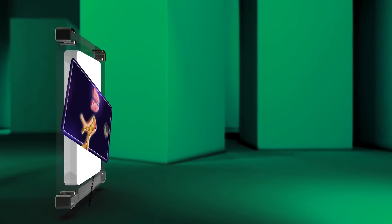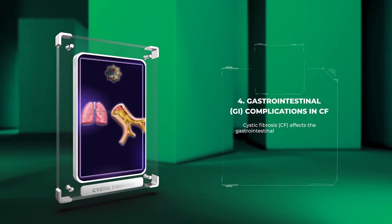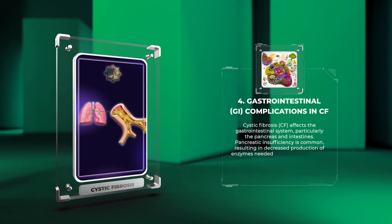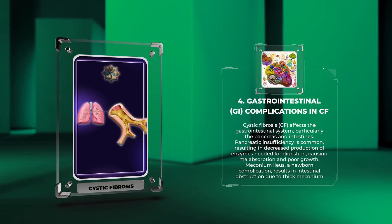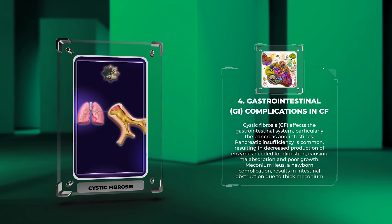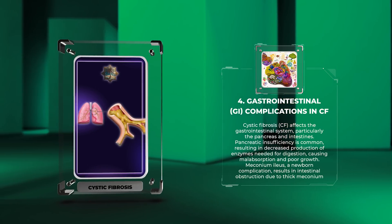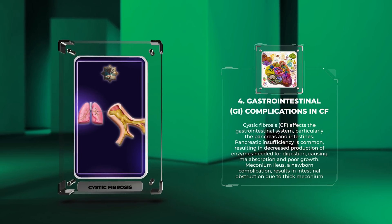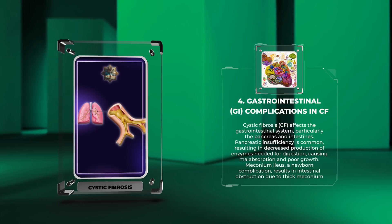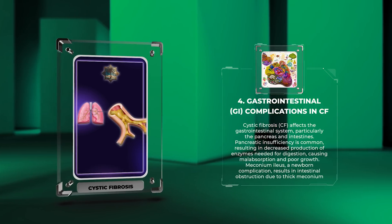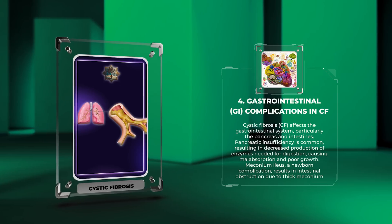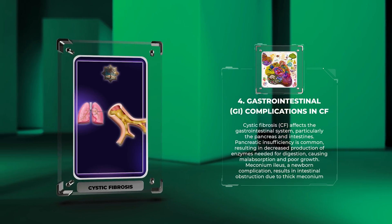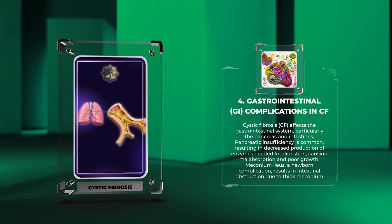Cystic fibrosis affects the gastrointestinal system, particularly the pancreas and intestines. Pancreatic insufficiency is common, resulting in decreased production of enzymes needed for digestion, causing malabsorption and poor growth. Meconium ileus, a newborn complication, results in intestinal obstruction due to thick meconium accumulation in the ileum.